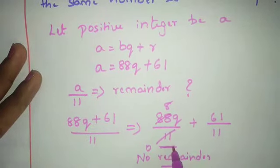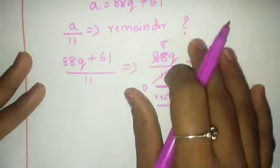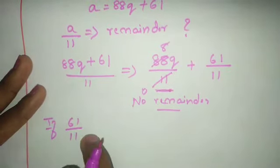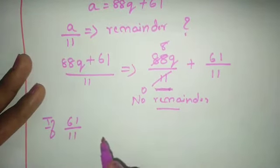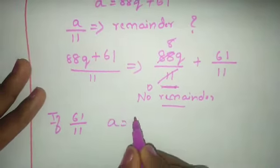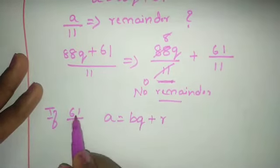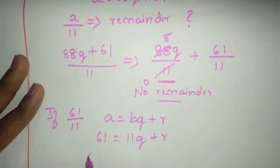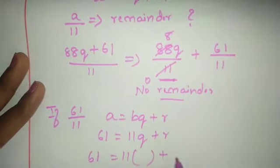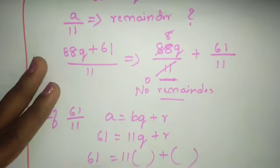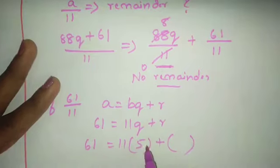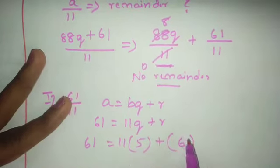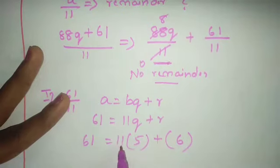For the first part, remainder is 0. Now consider 61 divided by 11. By Euclid's lemma: 61 = 11 × q + r. 11 × 5 is 55, and 61 − 55 is 6. So remainder is 6.